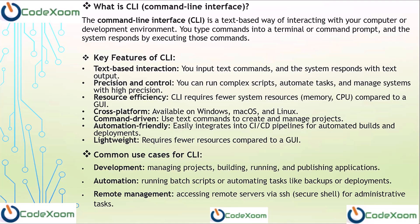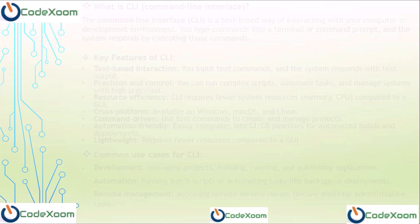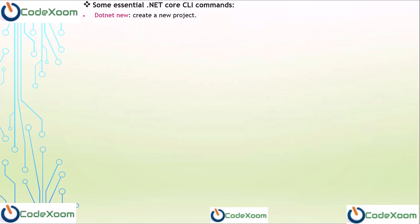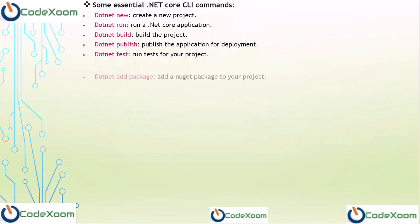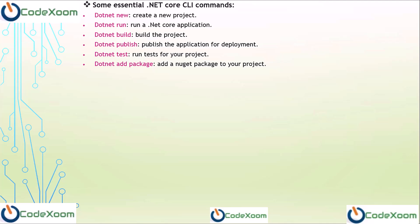Now we are going to show some .NET Core CLI commands. Number one, dotnet new — to create a new project; dotnet run — to run a .NET Core application; dotnet build — to build the application; dotnet publish — to publish or deploy the application; dotnet test; and dotnet add package — to add a new package to your project.